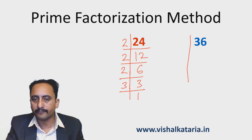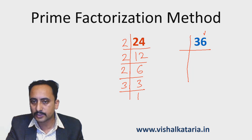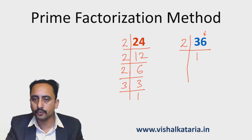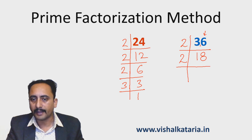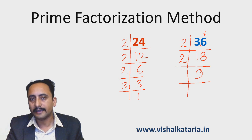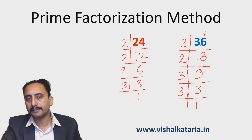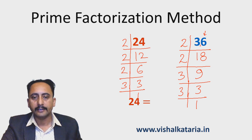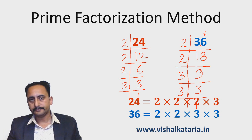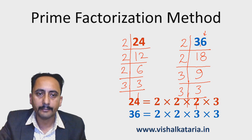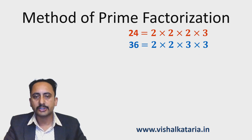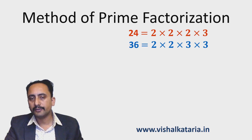Now let's find the prime factorization of 36. Since 36 is an even number ending in 6, it is divisible by 2: 36 ÷ 2 = 18, and 18 ÷ 2 = 9. Since 9 is odd, it is not divisible by 2, so I go to the next prime, 3: 9 ÷ 3 = 3, and 3 ÷ 3 = 1. So the prime factorization of 36 is 2 × 2 × 3 × 3. Step 1 — finding the prime factors of the given numbers — is complete.